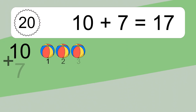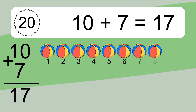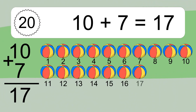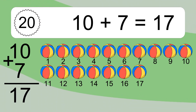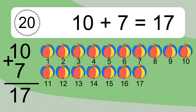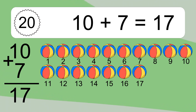10 plus 7 equals 17. Let's count it: 1, 2, 3, 4, 5, 6, 7, 8, 9, 10, 11, 12, 13, 14, 15, 16, 17.